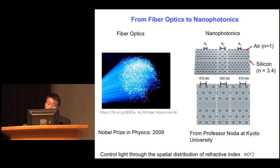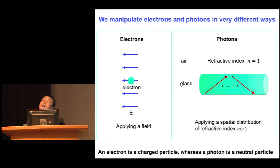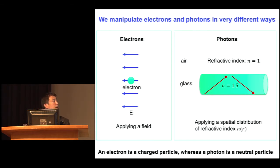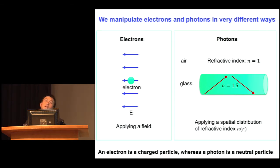I have reviewed how we manipulate light and compare that to how we manipulate electrons. One interesting observation is that we control these two fundamental particles in very different ways. When we control electrons, we tend to just apply a field. But when we control light, instead we make a material distribution with a spatial distribution of refractive index. This distinction is fundamental: electrons are charged particles so you can apply a field, but photons are neutral particles — there's no naturally occurring field that interacts directly with photons.